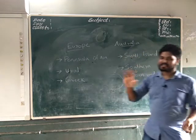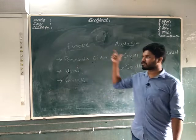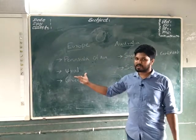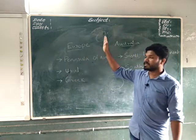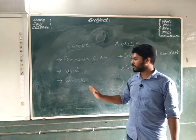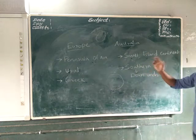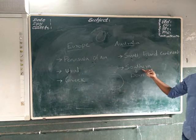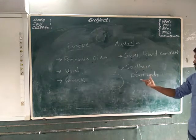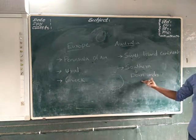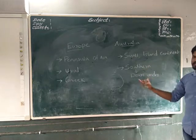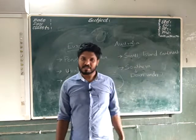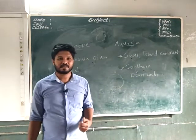Today we discussed about Europe and Australia. Europe is a peninsula of Asia and the Ural Mountains separate Asia and Europe. Australia is the smallest and island continent, situated in the southern hemisphere — it got the name 'Down Under' because it is completely in the southern hemisphere. Read the portion from the textbook. Have a nice day!